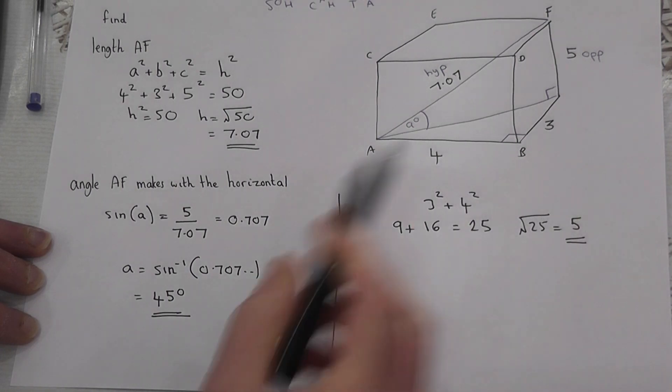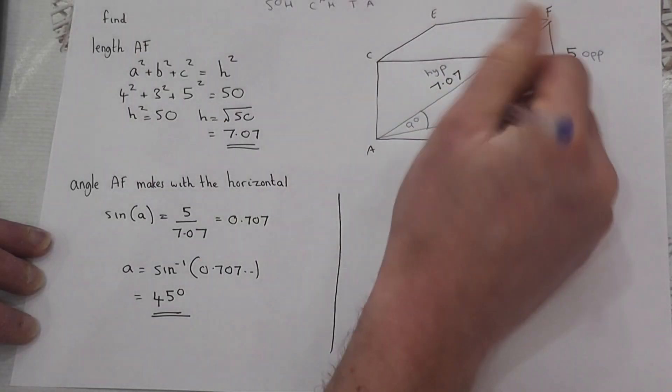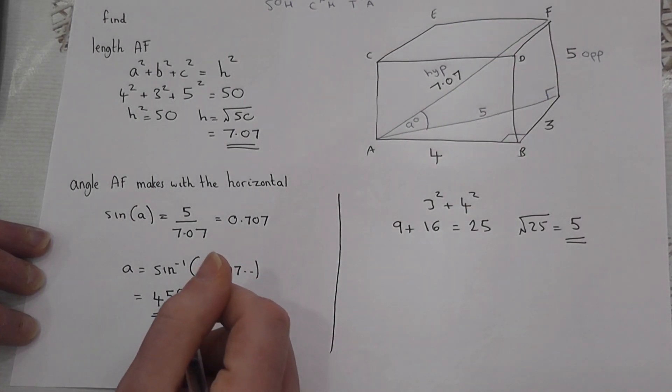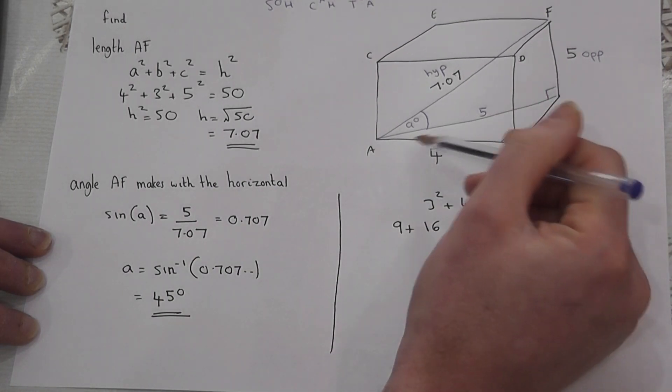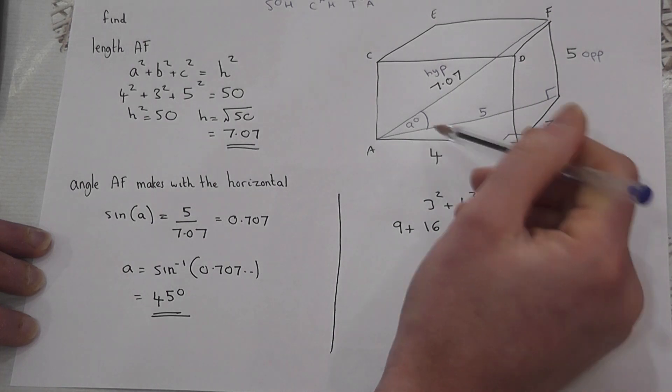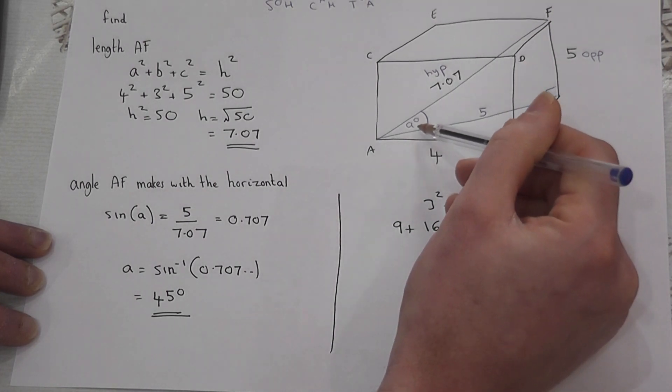If I add on the 5 here, this length is 5. If they're both 5, this must be isosceles, so therefore this has got to be 45 degrees.